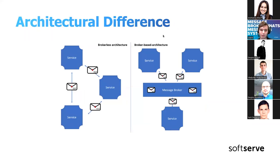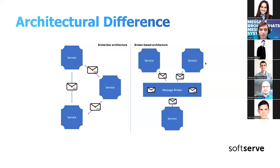Let's review the architectural difference between broker-less and broker-based architecture. In broker-less architecture, services communicate directly with each other using their own communication methods. In broker-based architecture, all services communicate through a message broker — messages are sent to and stored in the broker, providing a single unified communication path.